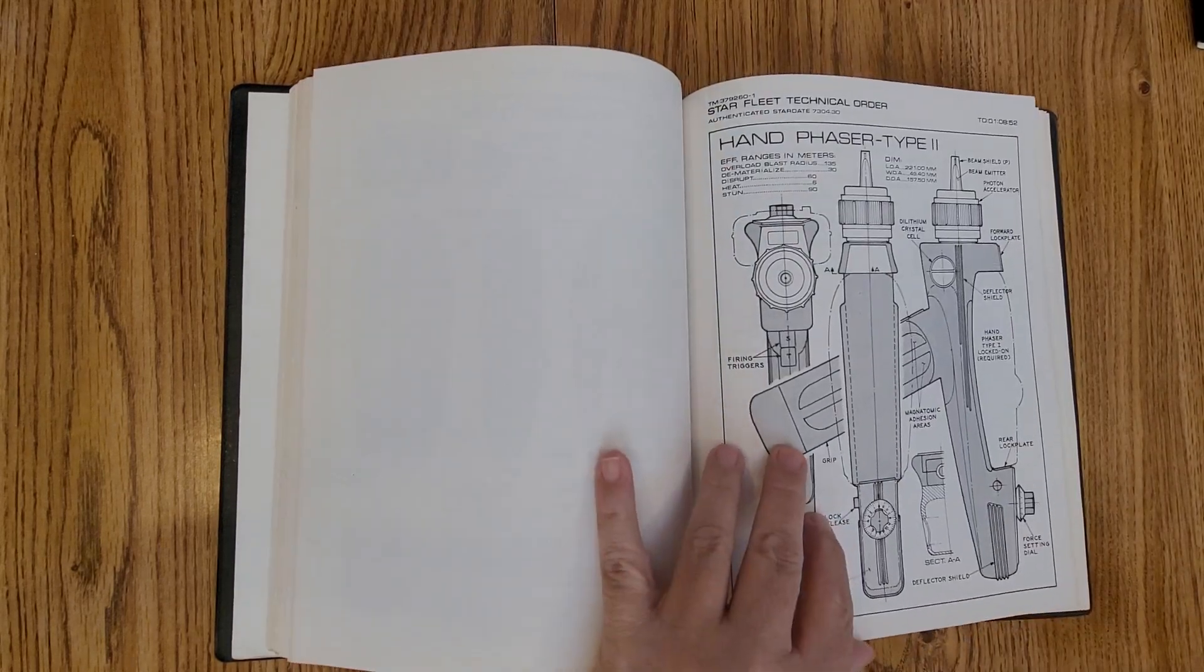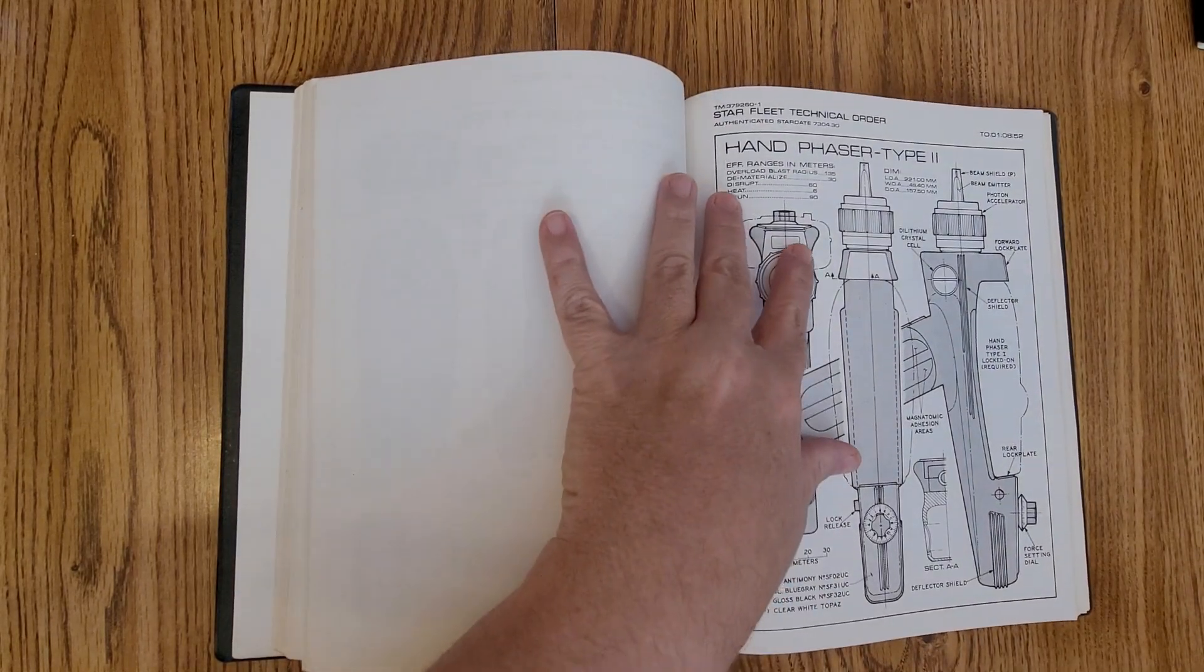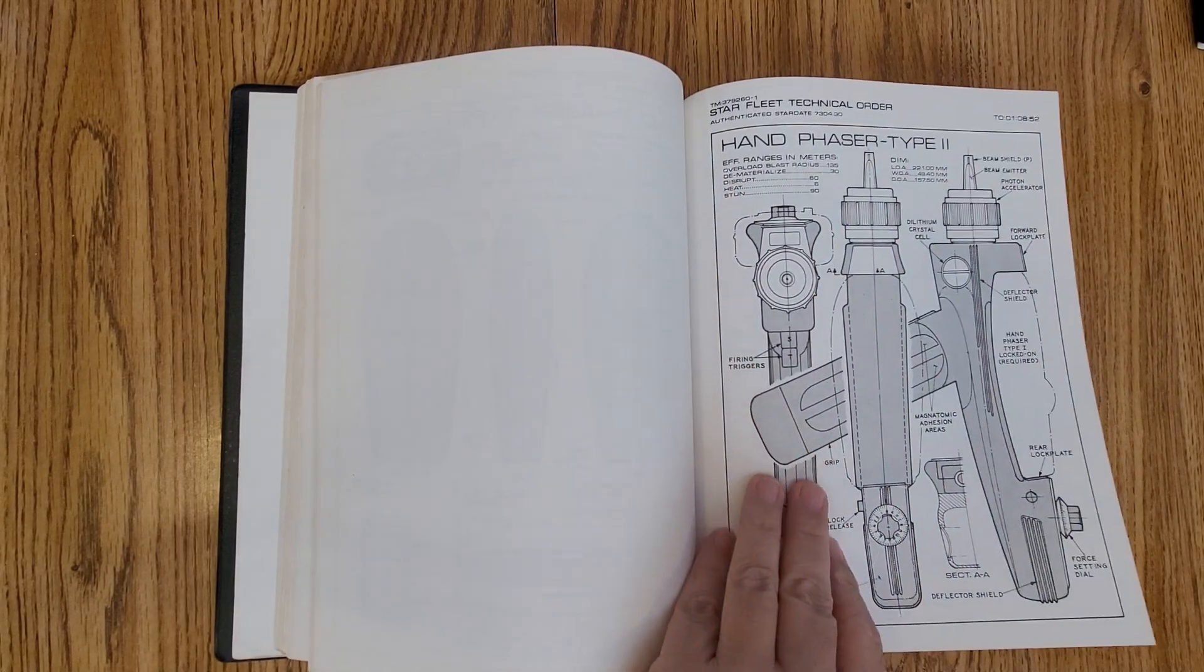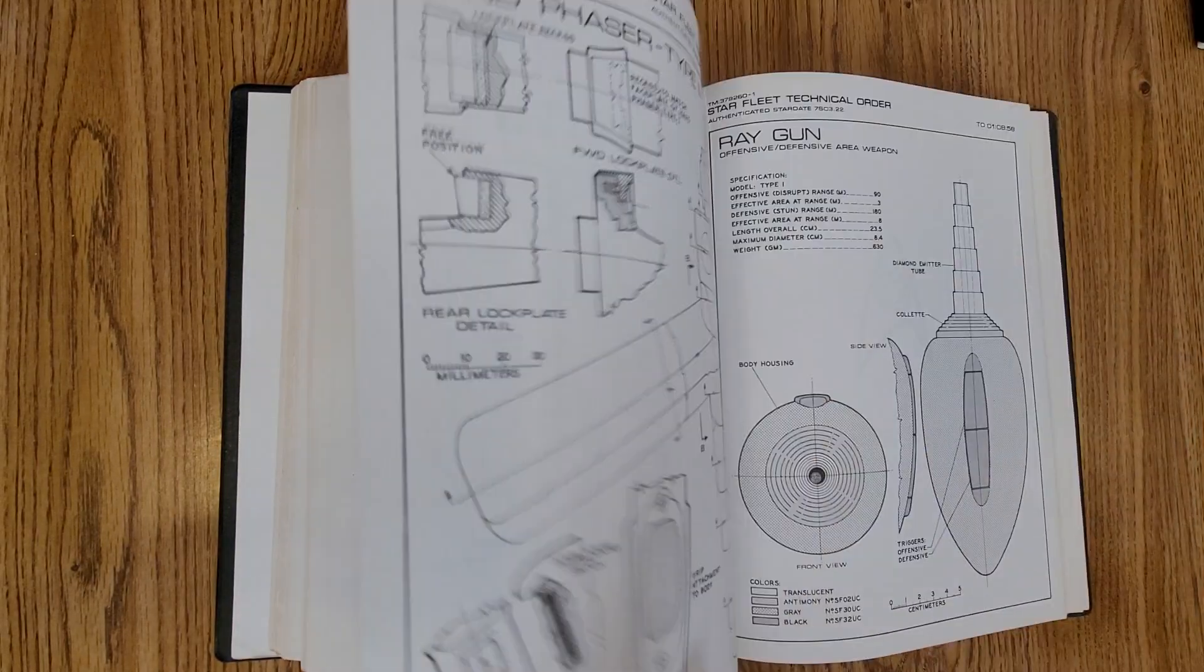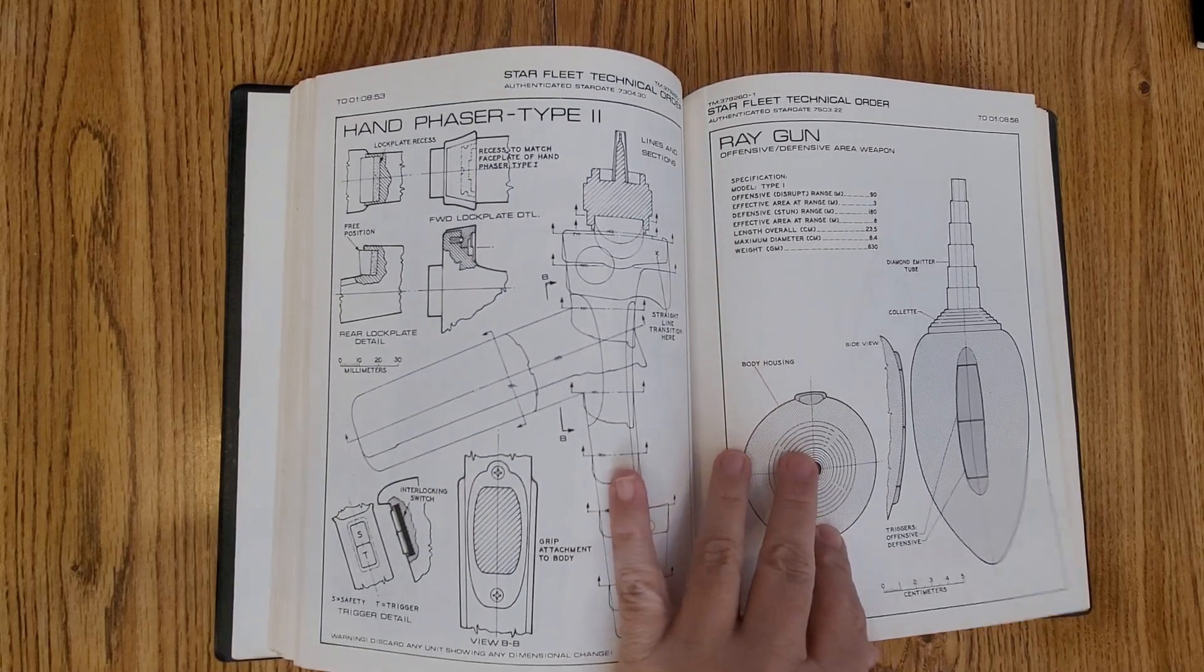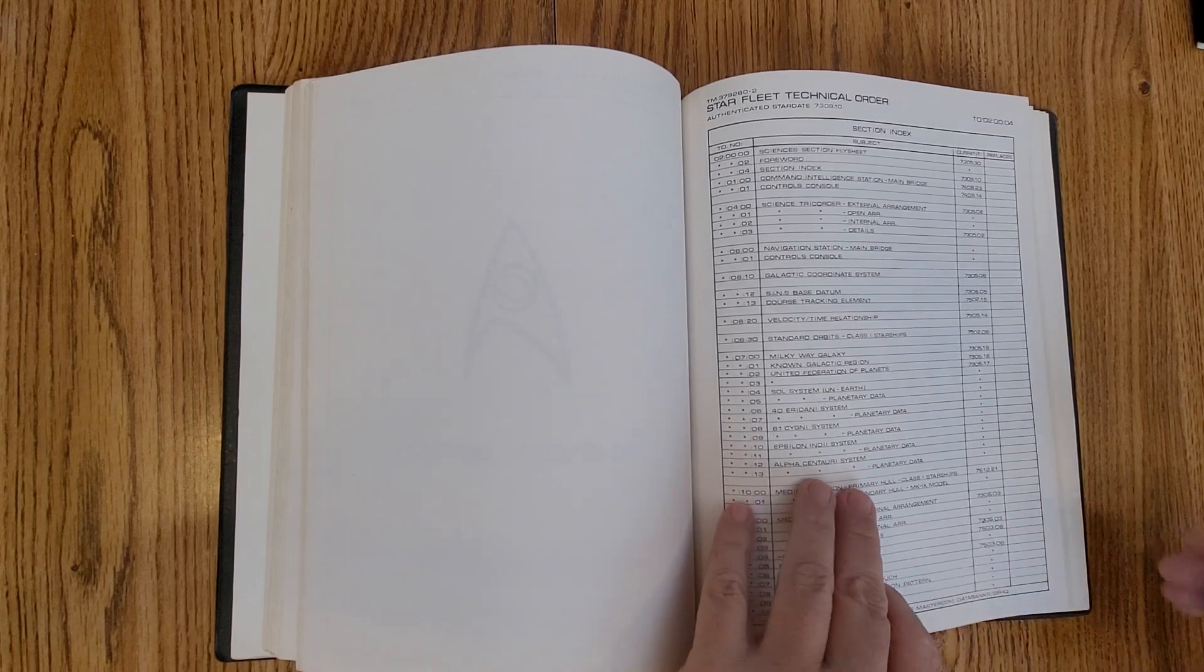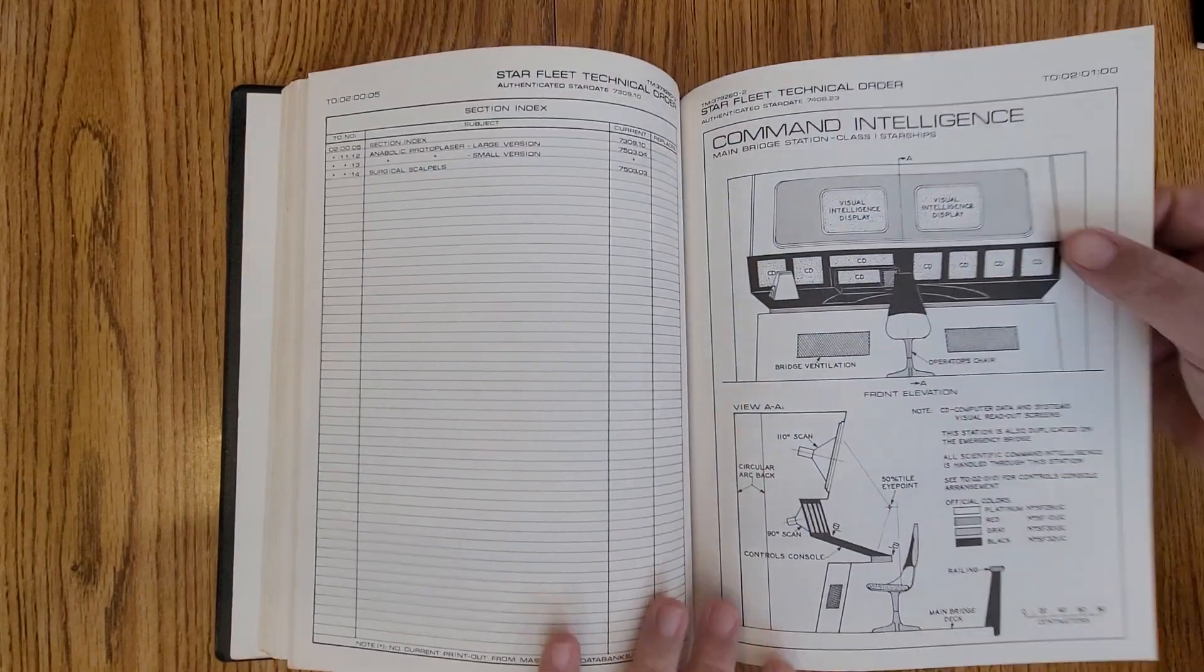Here's your phasers. Even talks about your stun, heat disrupt, dematerialize, and then overload. What the effective range and like meters were, the ray guns that they had. So this book is just chocked full of information.